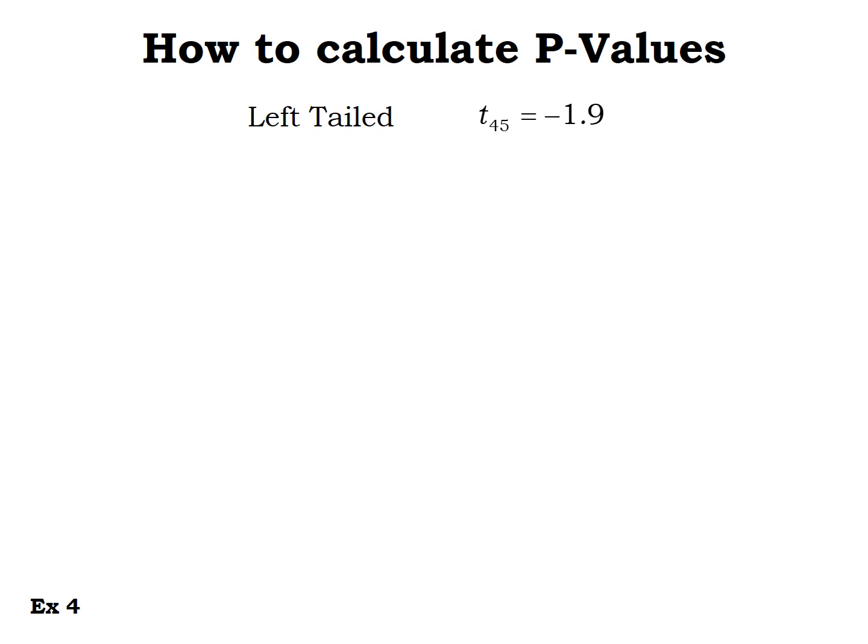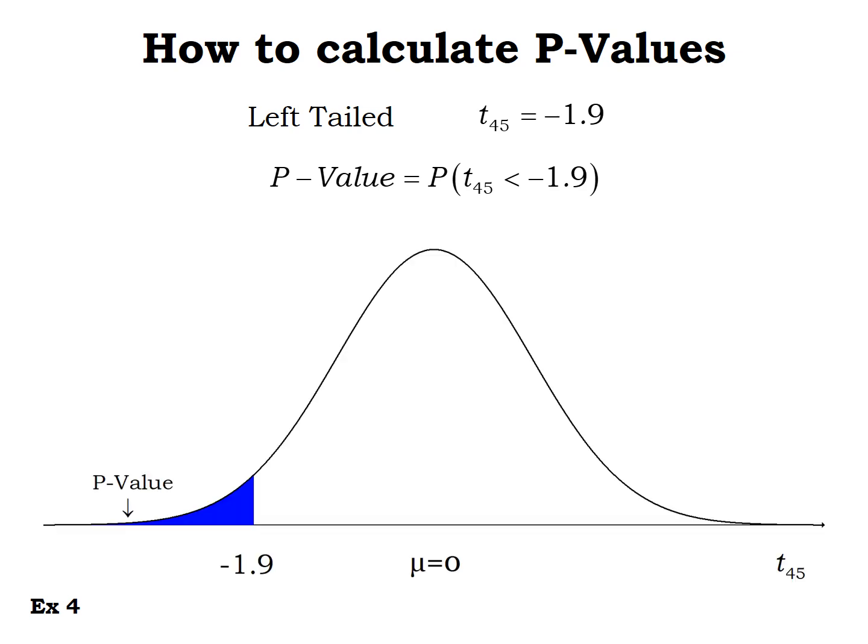For a left-tailed test with t-score negative 1.9, the p-value is the area to the left of negative 1.9. Using t-CDF from negative infinity up to negative 1.9, the p-value is 0.0319.